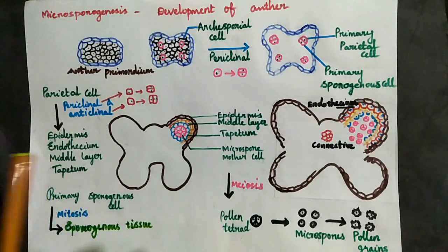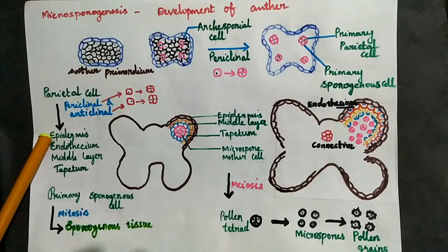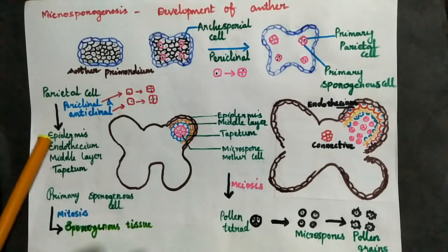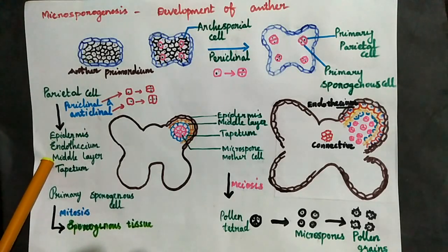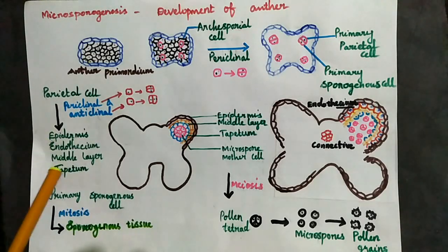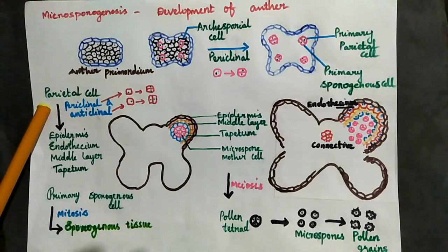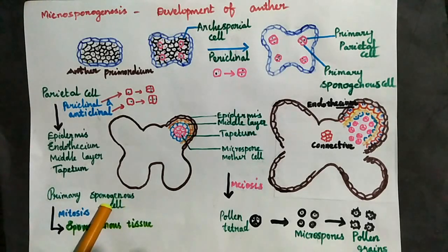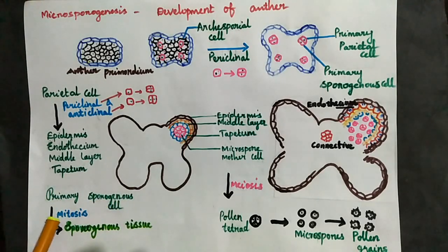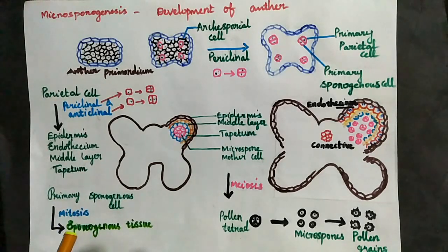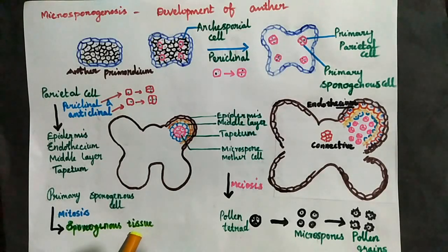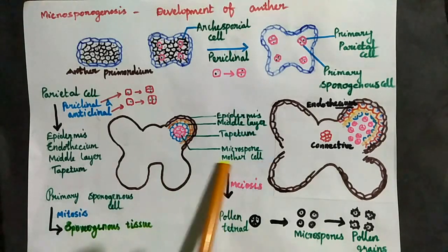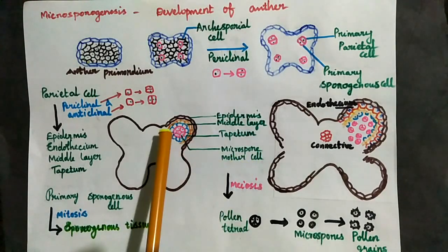The anther wall layers are formed from the primary parietal cell. From outside to inside, the layers are: first, the epidermis; second, the endothecium; then the middle layer; and finally the tapetum. The primary inner sporogenous cell then mitotically divides to produce more cells and form the sporogenous tissue.